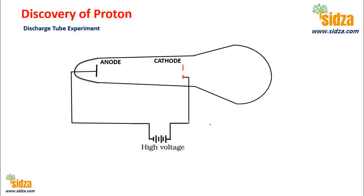Before the proton was discovered, J.J. Thomson, from his discharge tube experiments, proved that atoms contain negatively charged particles called electrons. Since an atom as a whole is electrically neutral and the presence of negatively charged particles was established by J.J. Thomson around 1879, it was thought that an atom must also contain some positively charged particles — that is why the atom is neutral.